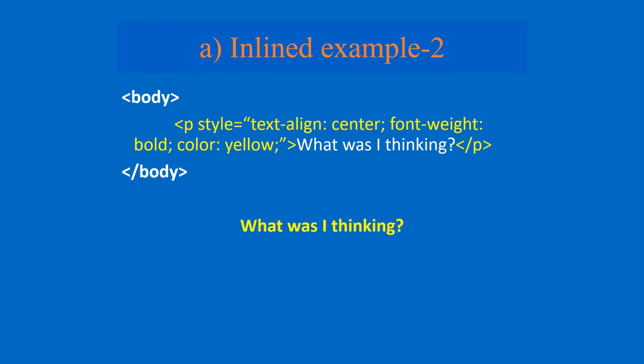Property, colon, value, semicolon. So text-align is the property, colon, then value: center. There are four values - left, right, center, top, bottom - but generally people use left, right, and center only. So text-align, colon, center, then put the semicolon. So one property along with the value is done.